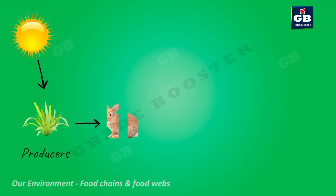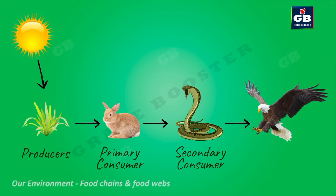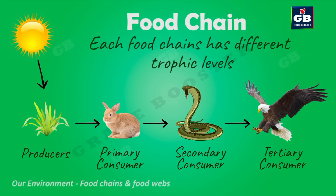The animals that feed on plants are called herbivores or primary consumers. The animals that feed on primary consumers are called secondary consumers. The animals that feed on secondary consumers are called tertiary consumers. Such a chain showing the food relations between different organisms of an ecosystem is called a food chain.